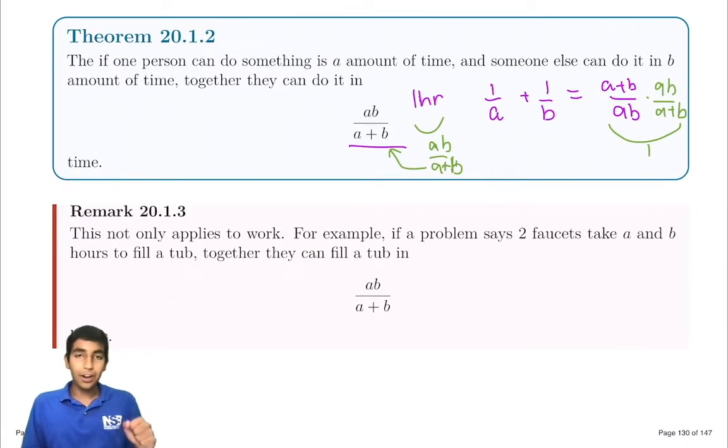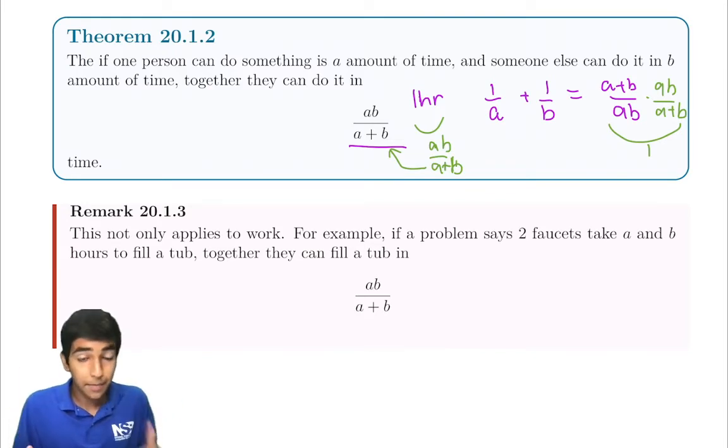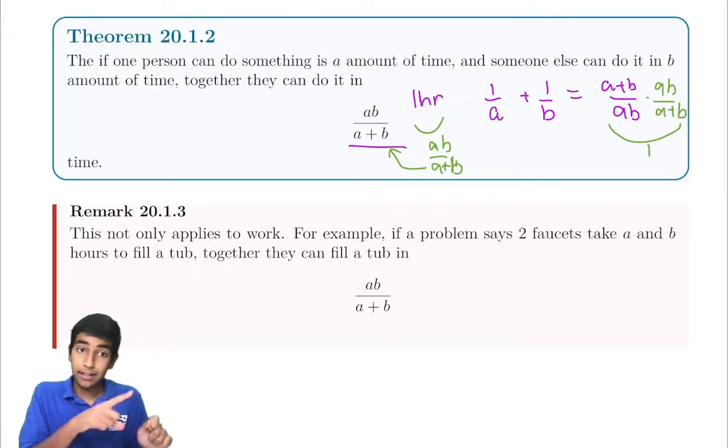And this not only applies to work. If the problem says two faucets take A and B hours to fill, together they just take the same formula, AB over A plus B hours or minutes or whatever units you're dealing with. Make sure to stay consistent. Sometimes the problem will try and throw you off by giving hours in the first thing and then asking for minutes.